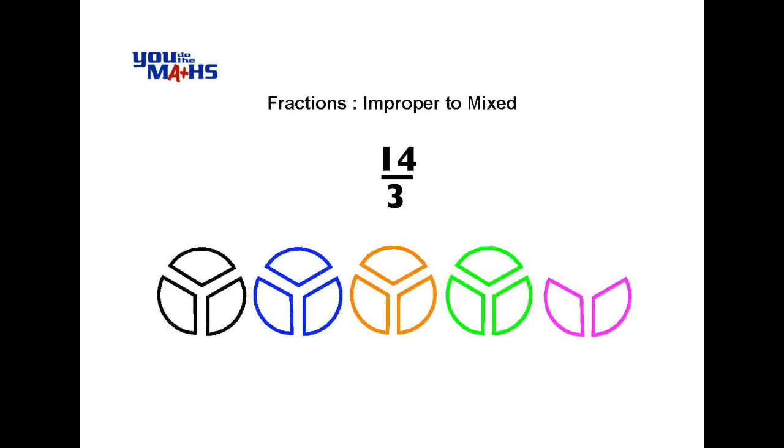If we look at the black circle first we can see that we've got three thirds. There's another 3 in the blue that makes 6, another 3 in the orange makes 9, another 3 in the green makes 12. And the pink circle, which is incomplete, has got two separate thirds, so it makes a total of 14 thirds.